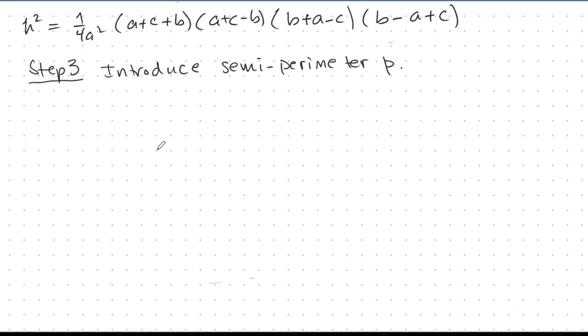In step three, we introduce the semi-perimeter, p. P is A plus B plus C over 2, as we mentioned before. But, we can look at it from this point of view. 2P is A plus B plus C. And, let's do something interesting here. If I subtract 2A from this, then I have 2P minus 2A here.